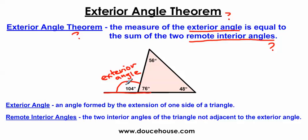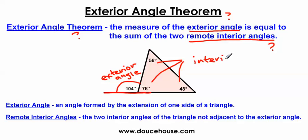Now if this is an exterior angle, what are the angles called on the inside of the triangle? If you said interior angles, you are absolutely correct. So these are interior angles.